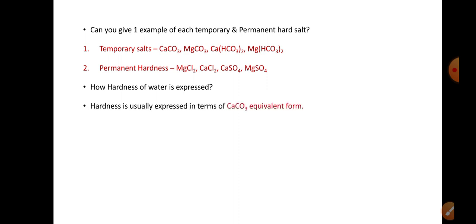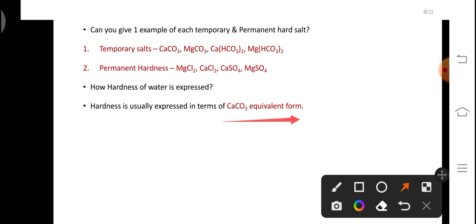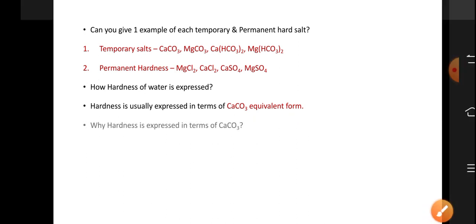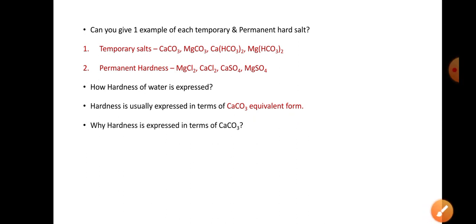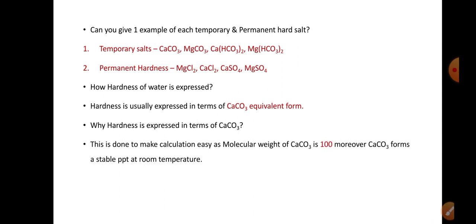How do we express hardness? Hardness is usually expressed in terms of CaCO3 equivalent form. Why do we express hardness in terms of CaCO3? This is to make the calculation easy, as molecular weight of CaCO3 is 100. Moreover, calcium carbonate forms a very stable precipitate at room temperature.